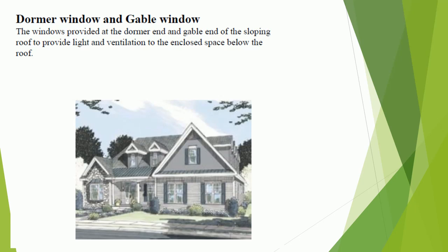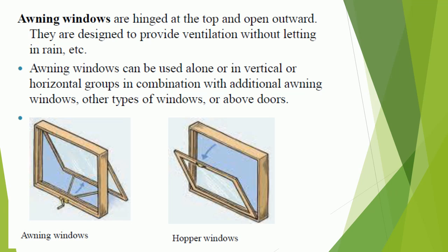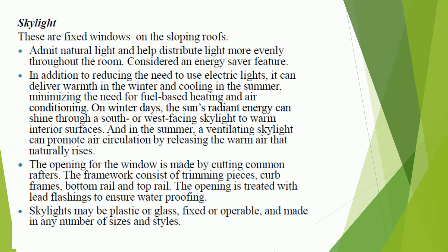Dormer window and gable window: these are provided at the dormer end and gable end of the sloping roof to provide light and ventilation to the enclosed space below the roof. Skylight: these are fixed windows on sloping roofs that admit natural light and help distribute light more evenly throughout the room. Considered an energy-saving feature, they reduce the need for electric lights, deliver warmth in winter and cooling in summer, minimizing the need for fuel-based heating and air conditioning. In winter, the sun's radiant energy can shine through a south or west-facing skylight to warm interior surfaces; in summer, a ventilating skylight can promote air circulation by releasing warm air that naturally rises. The opening is made by cutting common rafters; the framework consists of trimming pieces, curb frames, bottom rail, and top rail. The opening is treated with lead flashings to ensure waterproofing.